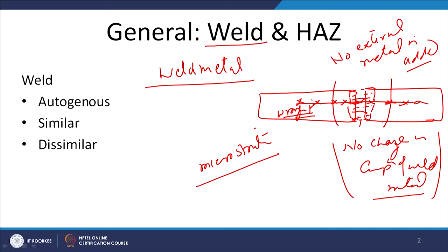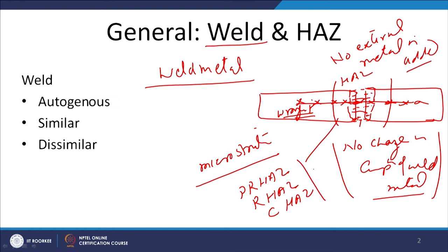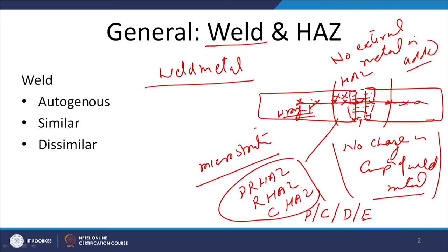As soon as we approach the heat affected zone, we will see various regions like a partially refined heat affected zone and a coarse grained heat affected zone. In the weld metal we may have planar grain structure, then cellular grain structure, then dendritic grain structure, and equiaxed. A similar kind of structural variation will be on the opposite side. So despite having the same composition, since melting has taken place and subsequent solidification occurs, and the heat affected zone has experienced the weld thermal cycle, it will also have different microstructural changes.